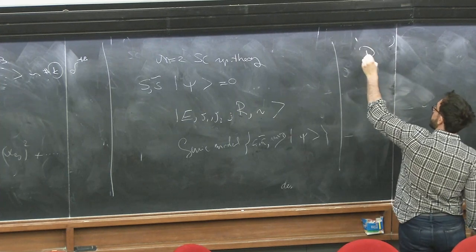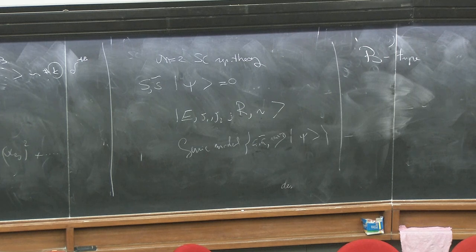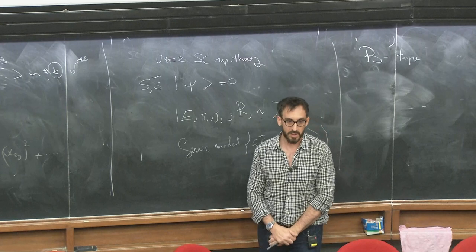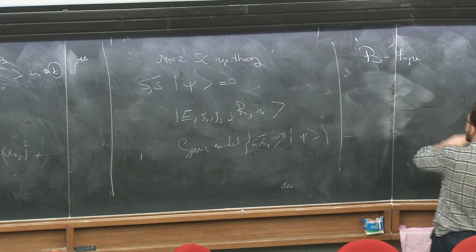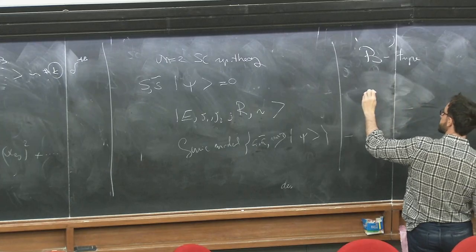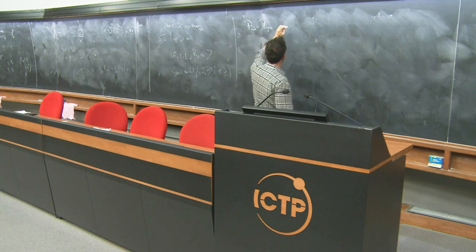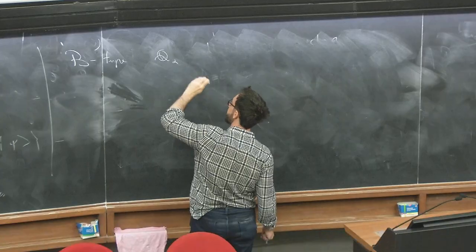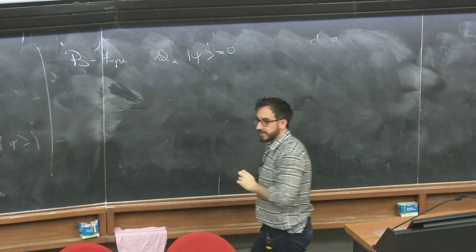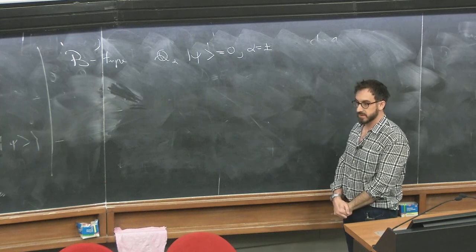We're going to have two distinct BPS-type conditions, which by a universally followed convention introduced by Dolan and Osborn are called B-type and C-type. The B-type shortening condition is of the form that the full supercharge Q_alpha annihilates the state for both choices of the Weyl-spinor index alpha. When this is true, this automatically implies that the corresponding Lorentz quantum numbers must be zero.